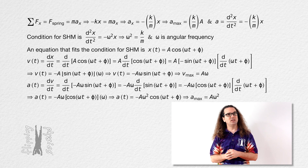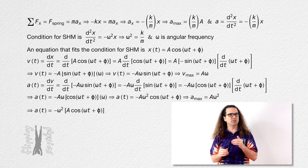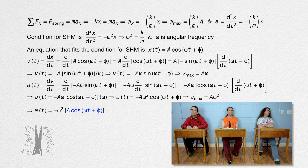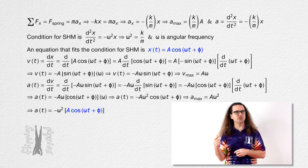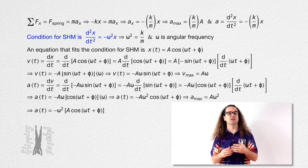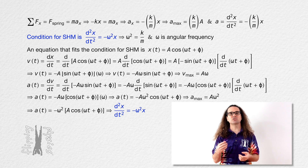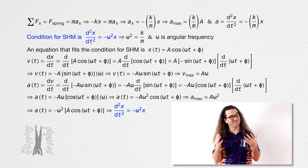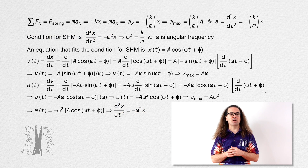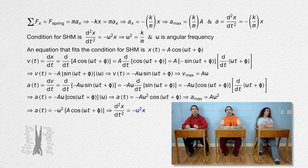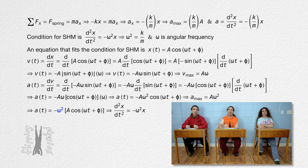When we rearrange the acceleration equation slightly, what is between the brackets? That is the position equation. That means we have just shown that this position equation satisfies the conditions for simple harmonic motion: the second derivative of position with respect to time equals the negative of the square of angular frequency times position. And now we can see why the equation for simple harmonic motion has the square of angular frequency and not just angular frequency — it is because when we start with that equation for position and take the derivative twice with respect to time, we get acceleration equals the negative of angular frequency squared times position. The square of angular frequency is right there in the derivation of the acceleration equation.